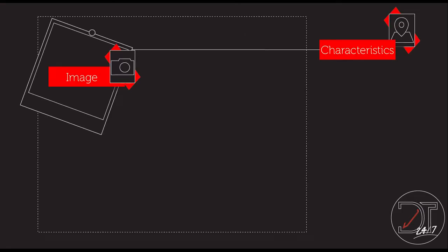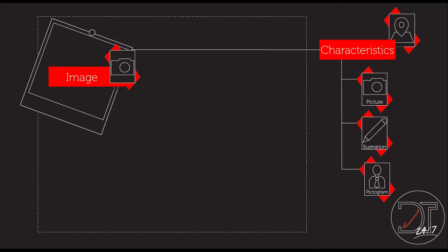The main and first thing you have to do is know which user you are going to map. When you decide that, you have to take a picture or you can make an illustration. It's very important to make it real. You can use a pictogram, but that is not as good as a picture or illustration because it will allow you to know that you are mapping someone real.